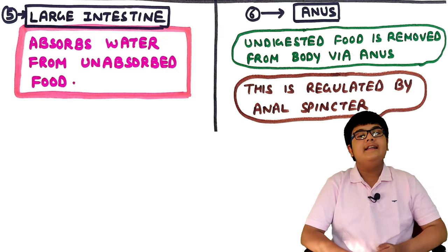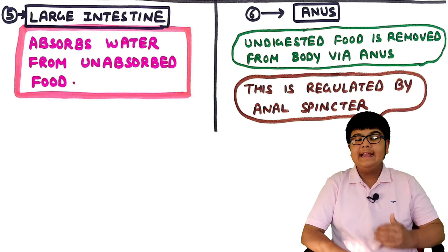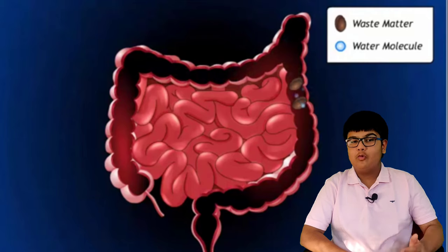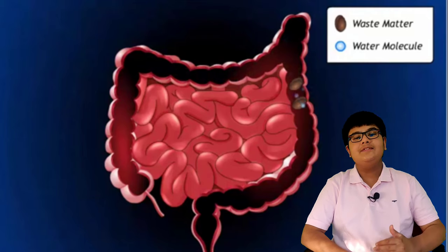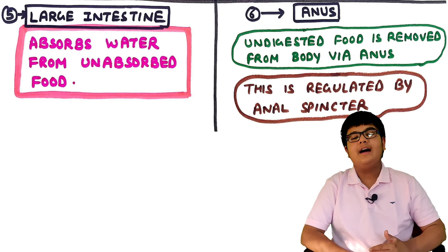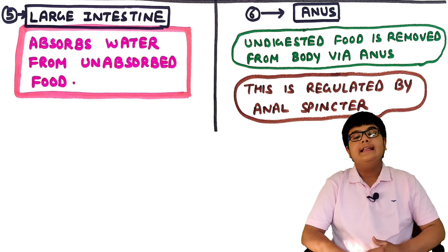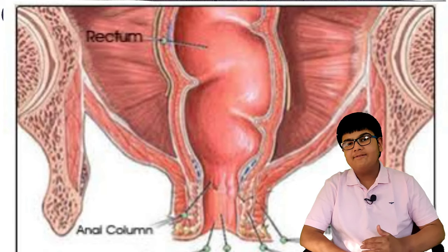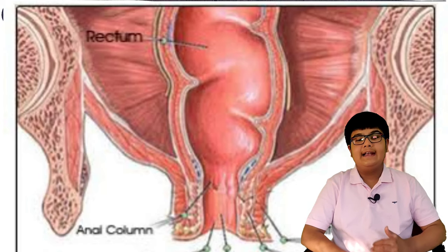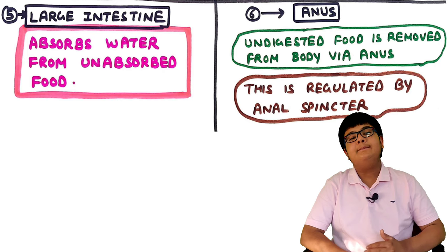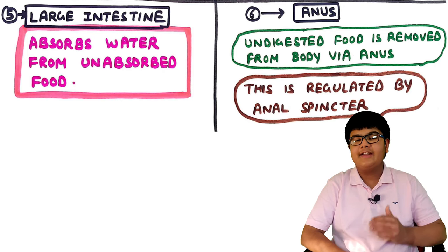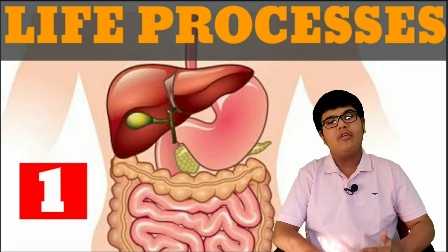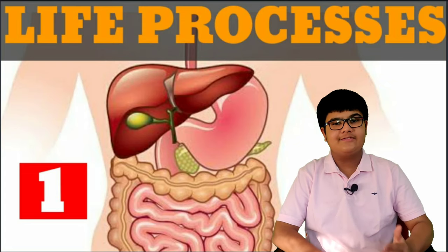Fifth, the large intestine - it absorbs water from the unabsorbed food. The last part of the alimentary canal is the anus, through which undigested food is removed from the body. This is regulated by the anal sphincter. This concludes the human digestive system.